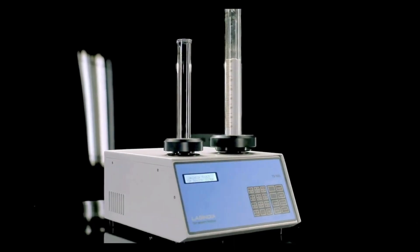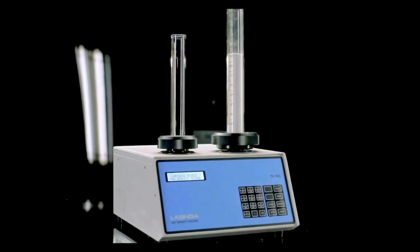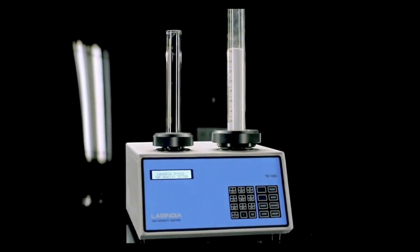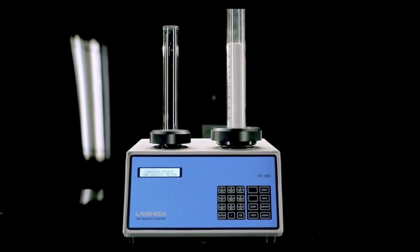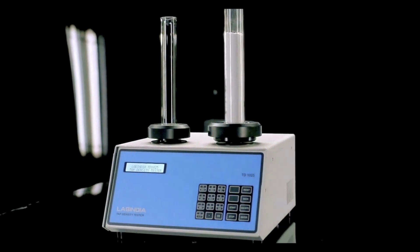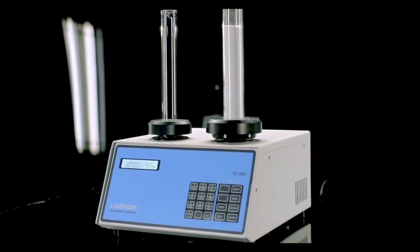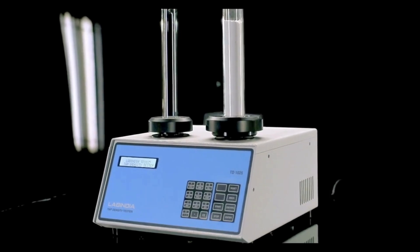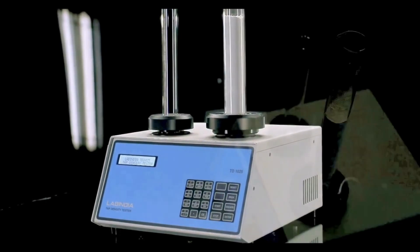If sample weight is about 100 grams or above, use a 250 milliliter measuring cylinder, otherwise use a 100 milliliter measuring cylinder. Fix the measuring cylinder into the holder provided for holding the measuring cylinder on the instrument.